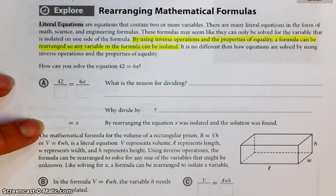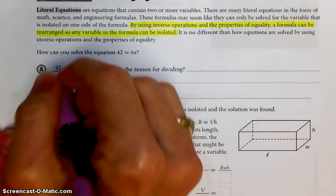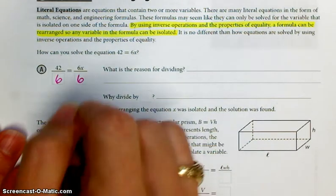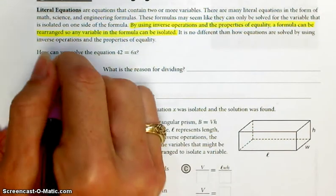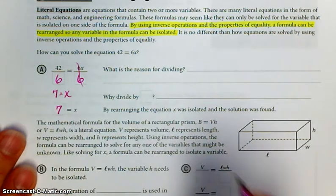All right, so we're going to get right into it. And we'll go with this first one. It says, how can you solve the equation 42 equals 6x? Well, you're going to divide both sides by 6. And when you do that, 42 divided by 6, you get 7.